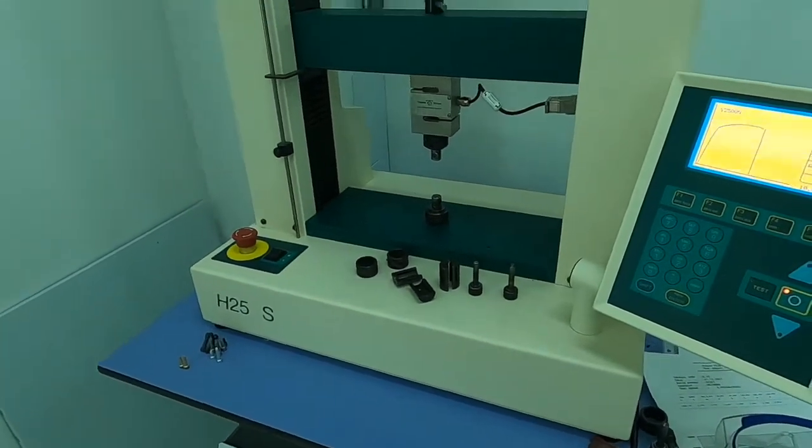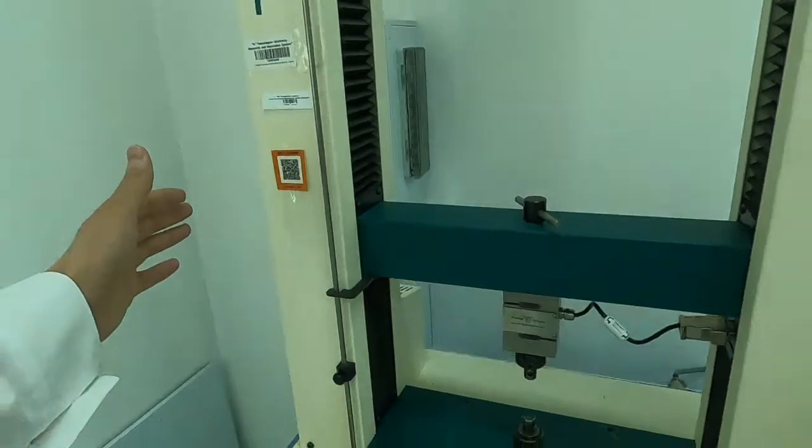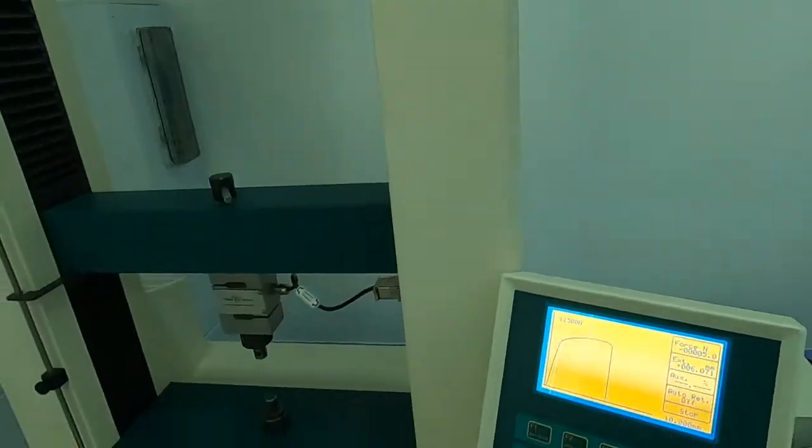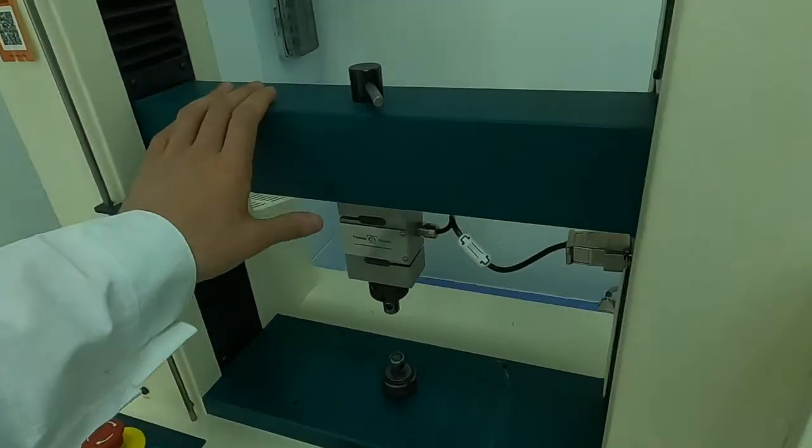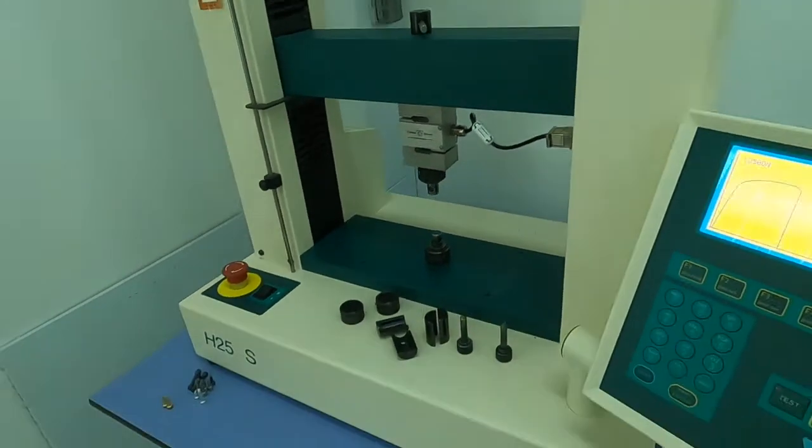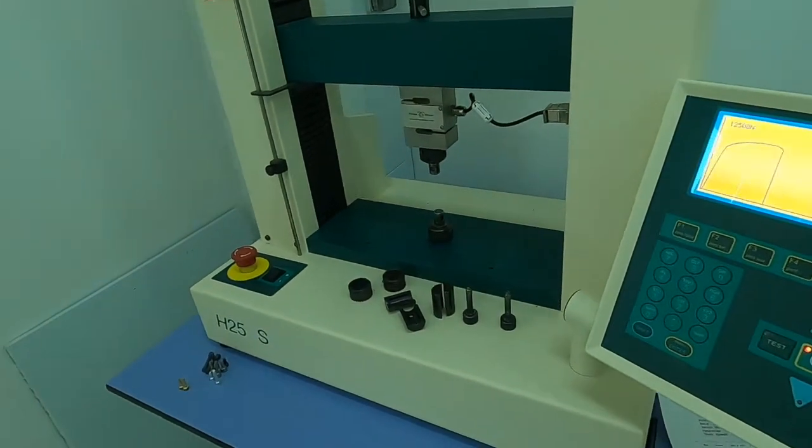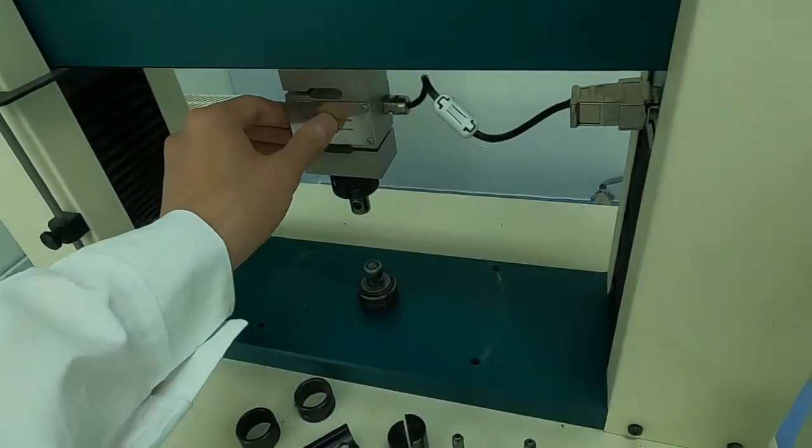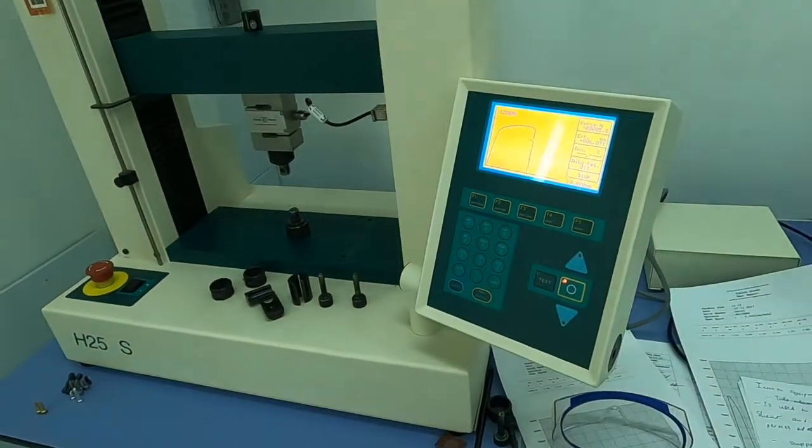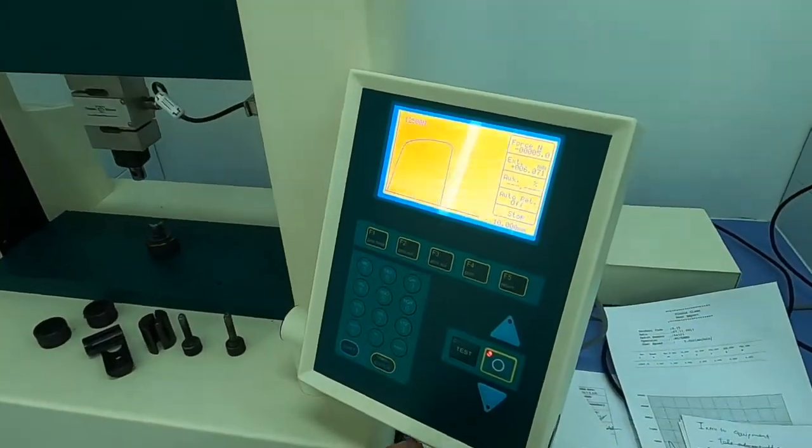It consists of two support frames and a traverse system with adjustable speed load cell, and a control display unit.